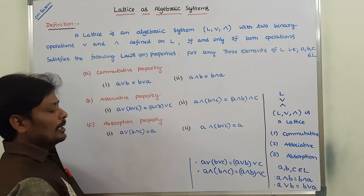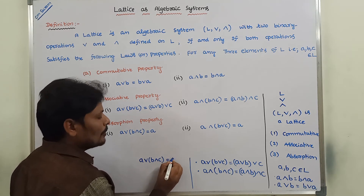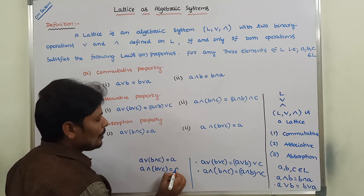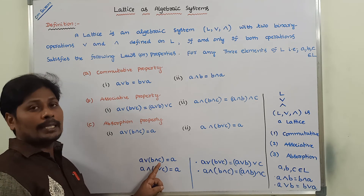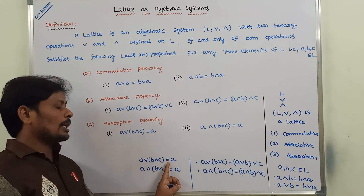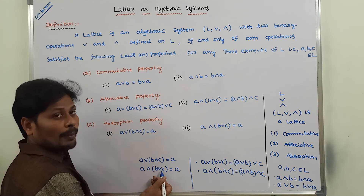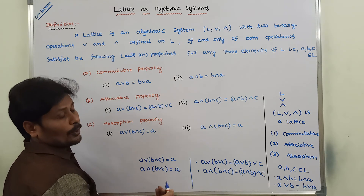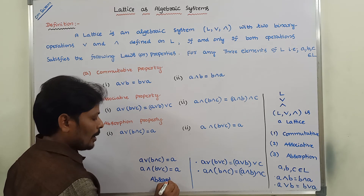The third property is absorption property. Absorption property states: A join (A meet B) is equal to A. Also, A meet (A join B) is equal to A. For the first one, we calculate the meet operation between A and B, and whatever result we get, that is joined with element A, giving result A. For the second one, we calculate the join operation between A and B, and whatever result we get, that result is met with element A, and the answer is A. This is the absorption law.